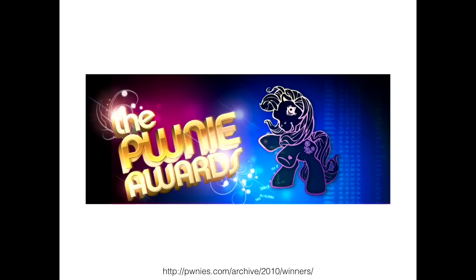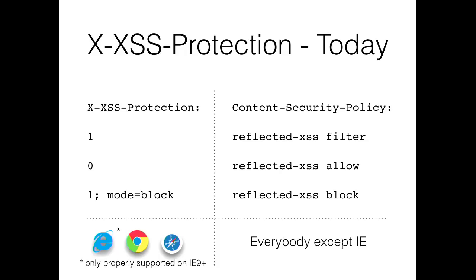If you want to check out more such epic failures, go to ponies.com. What this header sends today is an additional mode — the block mode — which tells the browser to stop rendering the entire page when it detects a script injection attempt. This is something that Content Security Policy offers an equivalent of. The problem is CSP is supported by every browser but IE, and even with X-XSS-Protection, older IE still has trouble. You're better off disabling it for older IE and only enabling block mode for newer IE.